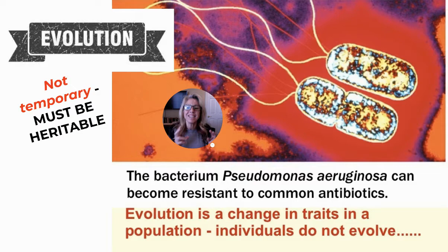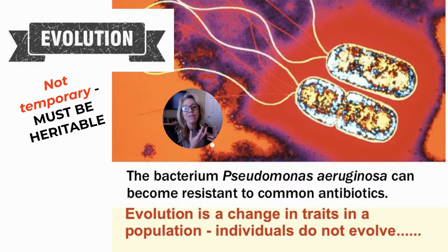For instance, a big concern right now is all the bacteria that are getting selected for that are resistant to our antibiotics. That's a form of artificial selection — we're killing off the weak bacteria, and the ones that are surviving and thriving have the ability to withstand the antibiotics that we are applying.